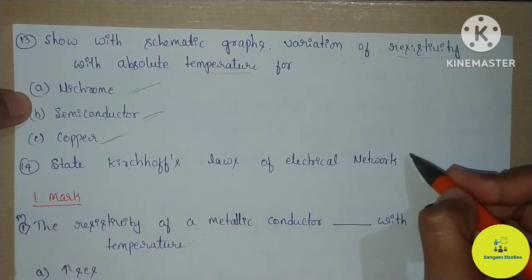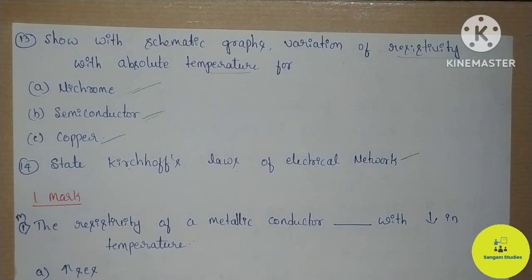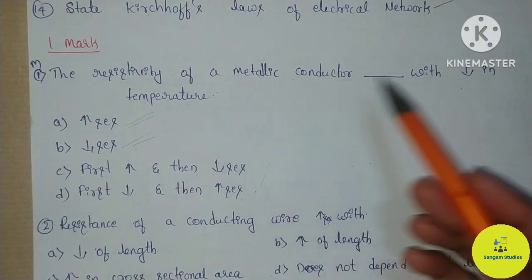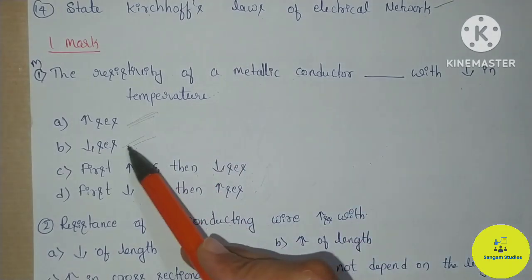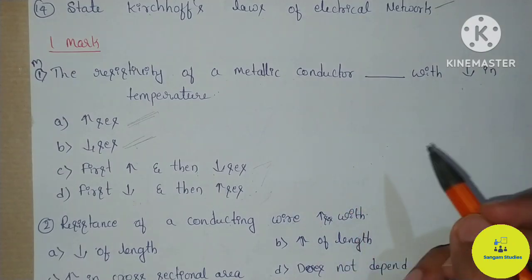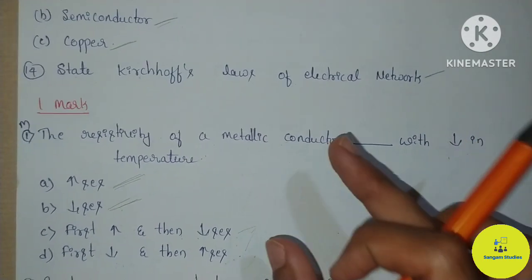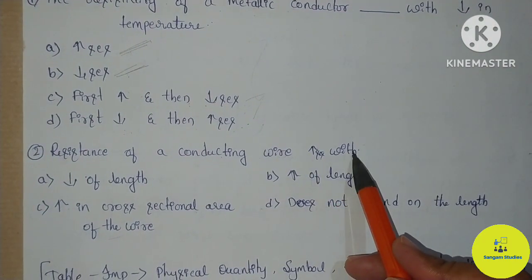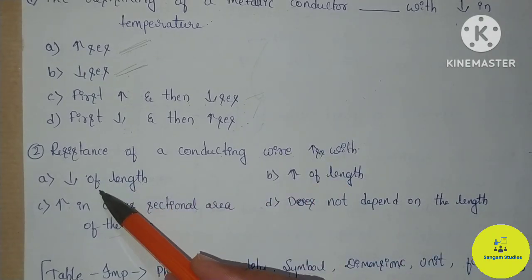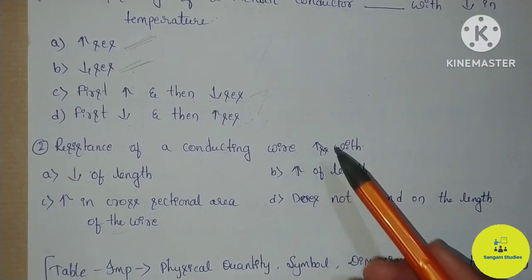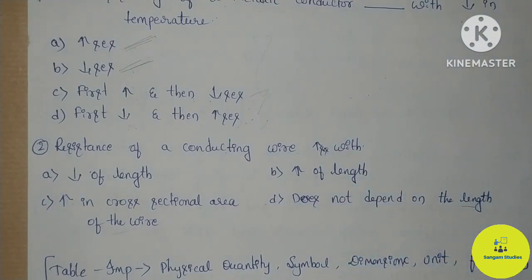State Kirchhoff's laws of an electrical network — two laws, last 3-mark important questions. One MCQ question: the resistivity of a metallic conductor with decreasing temperature — does it increase, decrease, first increase then decrease, or first decrease then increase? Write your answer in the comment section. Second question: resistance of a conducting wire increases with — length decrease, length increase, or length depending — write one option in the comments.